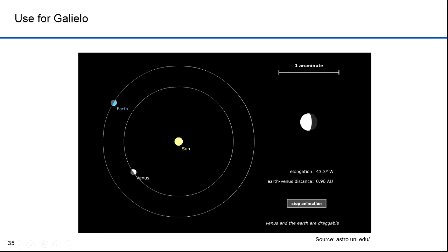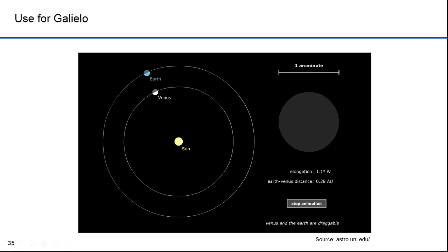Galileo also observed Venus going through all phases, including being fully illuminated. The Ptolemaic model didn't allow for that. The Keplerian model did. Also notice that it is at its biggest up to an arc minute as it becomes new. It then shrinks when it becomes full. This could only happen if Venus and Earth orbited the Sun with Venus in an interior orbit. This discovery, along with the moons orbiting Jupiter, led Galileo to believe that the Sun had to be at the center of the solar system.